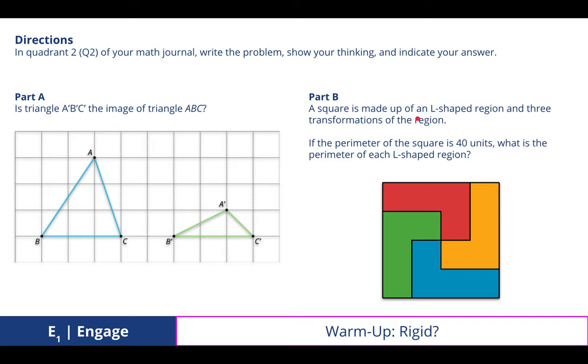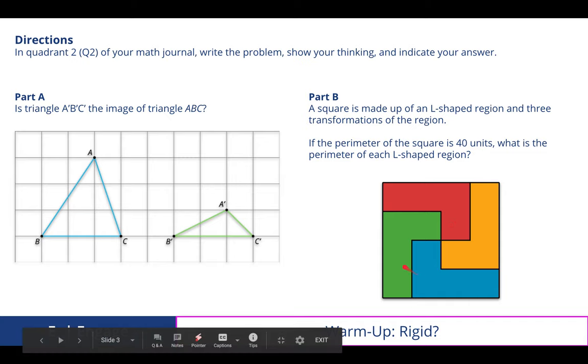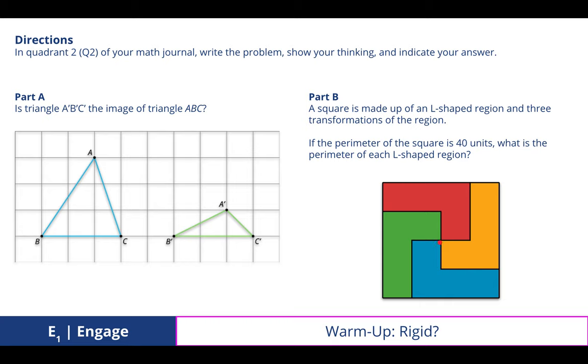Part B: A square is made up of an L-shaped region and three transformations of that region. We discovered that the transformation is a rotation each time. Looking at the red one going to the yellow, then the blue and the green, that would be a clockwise rotation about the center point here, where the red dot is.